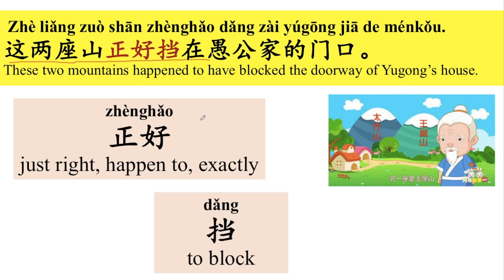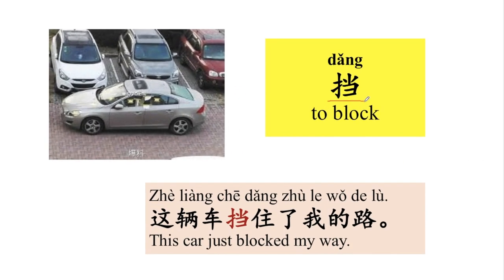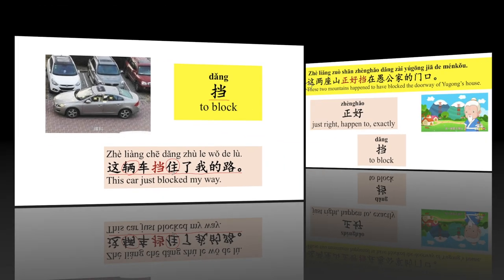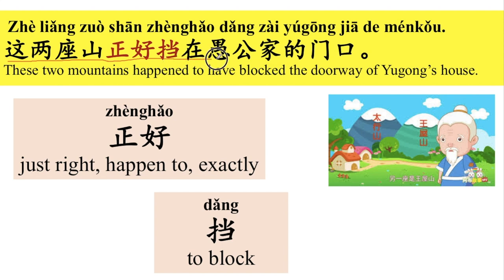挡在。挡 means to block. For example, 这辆车挡住了我的路。This car blocked my way. 辆 is a measure word for cars. 挡住，住 put after the verb indicates the result — it blocked. 好，这两座山正好挡在愚公家的门口。